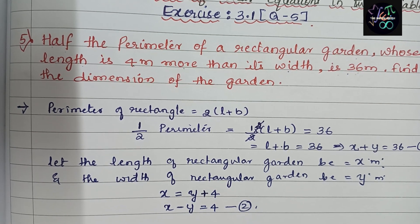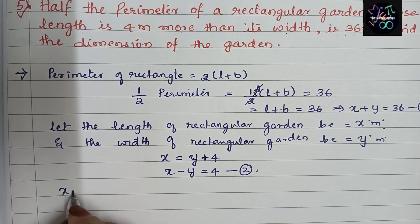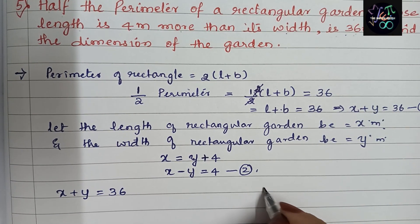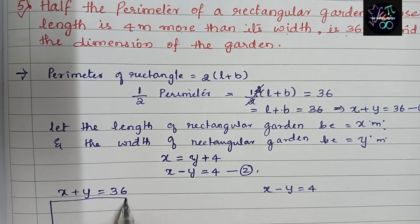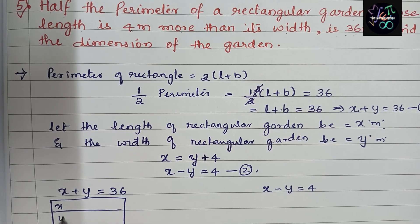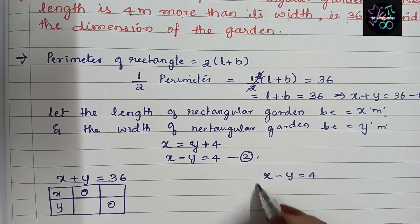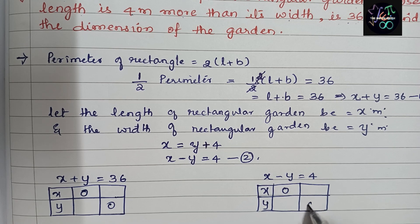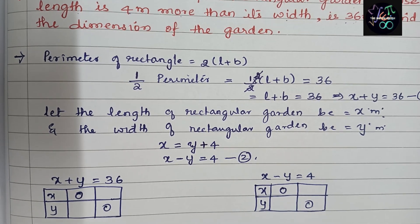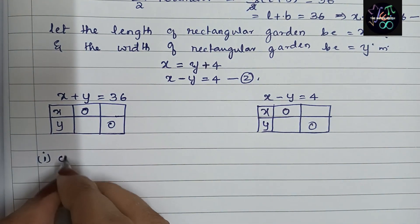They have given this in a graphical method exercise, so let us solve graphically. First equation: x plus y = 36. Second equation: x minus y = 4. We will make a small table and take x and y values. For x we will consider 0, and for y we will consider 0 — same for both equations.